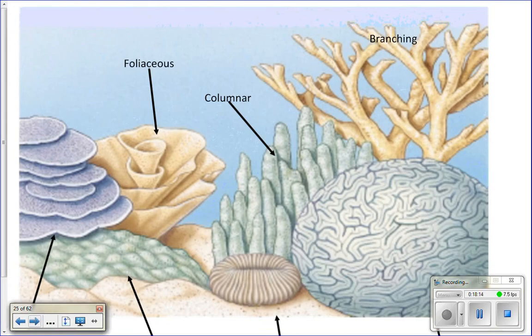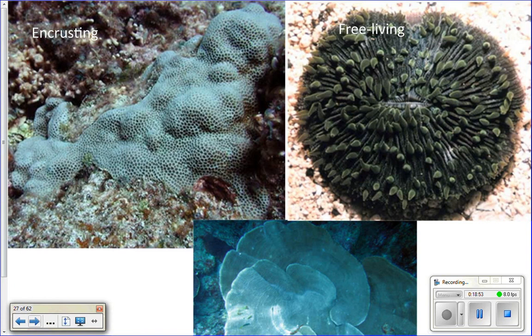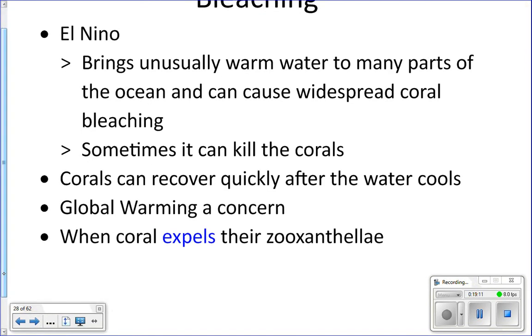Here are the different types of coral shapes: plate corals, foliaceous, columnar, branching, massive corals, free-living — like the little mushroom coral — and encrusting, which grows over the surfaces of things. These all have different growth rates; for example, the massive brain coral grows more slowly than the branching coral. Here are pictures of actual corals: massive, branching, foliaceous, columnar, encrusting, plate coral, and the free-living coral with its tentacles.